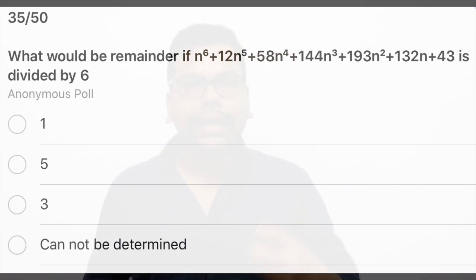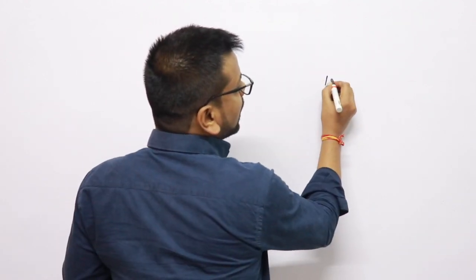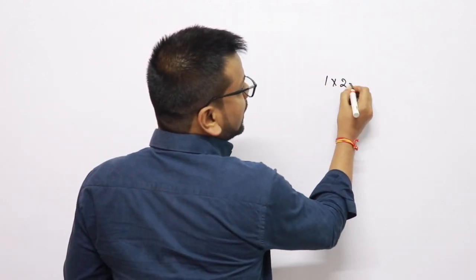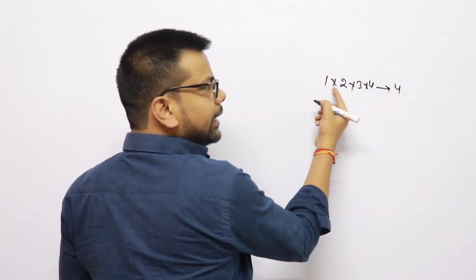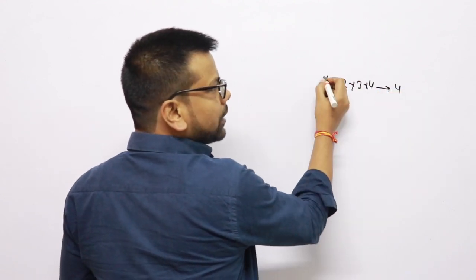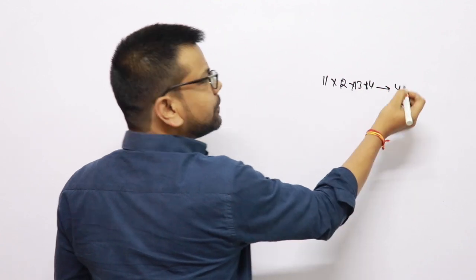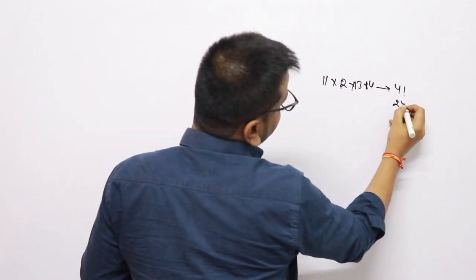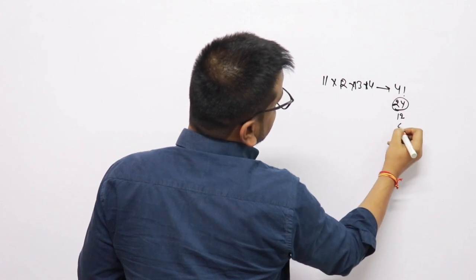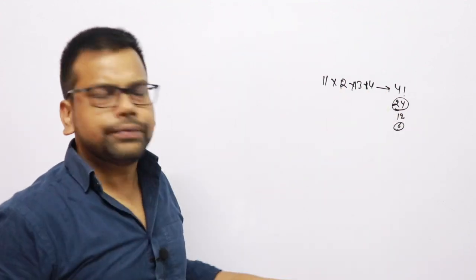The concept is: the product of n consecutive numbers is always divisible by n factorial. This means that if you have 4 consecutive numbers — for example 1, 2, 3, 4 or 11, 12, 13, 14 — their product is always divisible by 4 factorial, which is 24. So the product is divisible by all factors of 24 as well.